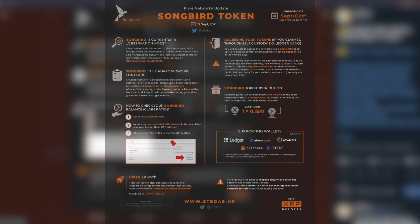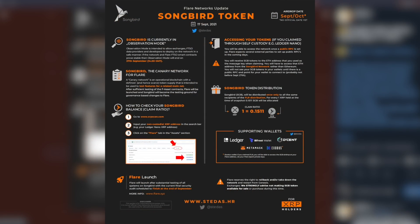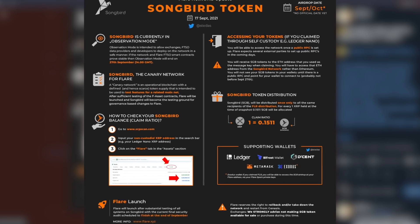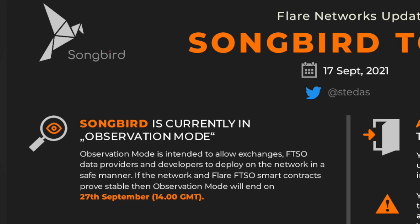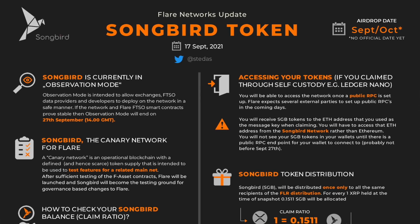Songbird is currently in observation mode. Observation mode is intended to allow exchanges, time series oracle data providers, and developers to deploy on the network in a safe manner. If the network and time series oracle smart contracts prove stable, then observation mode will end on the 27th of September — and that's the important date.